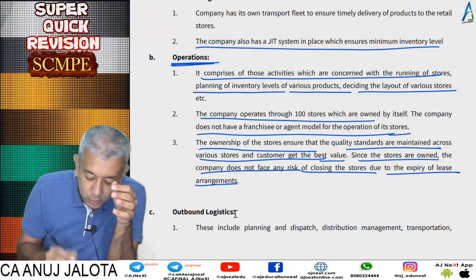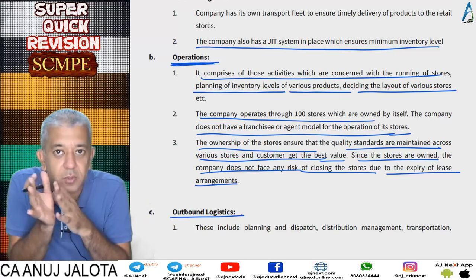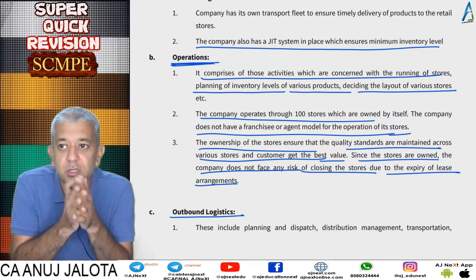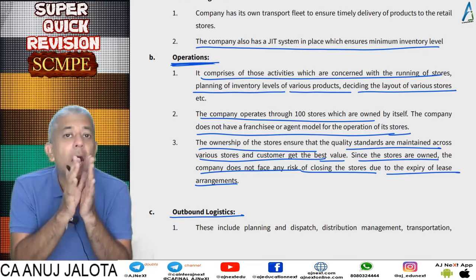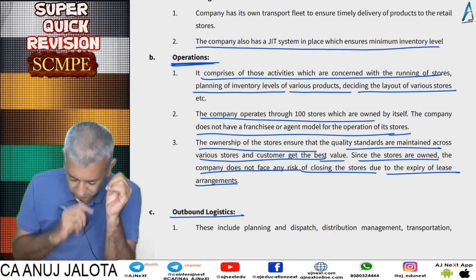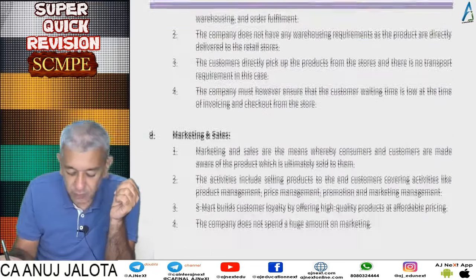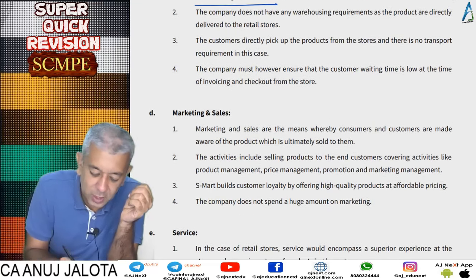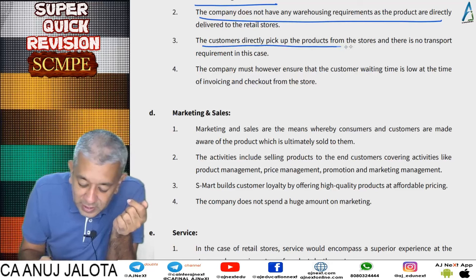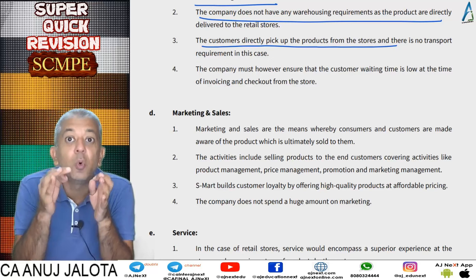For outbound logistics, this normally means sending goods to distributors, but it's not quite applicable to a retail company like S-Smart because the consumer comes and picks up the goods directly. However, outbound logistics can include warehousing requirements of finished goods — activities like planning, dispatch, distribution, transportation, warehousing, and order fulfillment. In this case, the company does not have warehousing requirements as products are directly delivered to retail stores, and customers pick up products themselves.